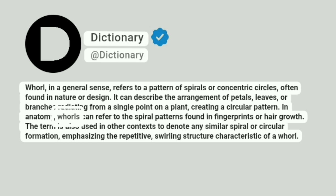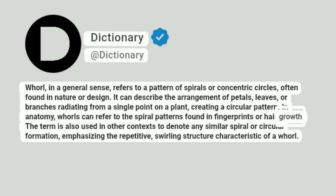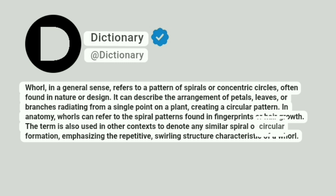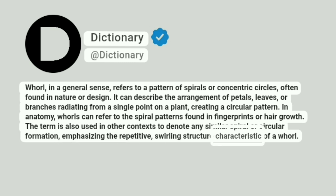In anatomy, whorls can refer to the spiral patterns found in fingerprints or hair growth. The term is also used in other contexts to denote any similar spiral or circular formation, emphasizing the repetitive, swirling structure characteristic of a whorl.